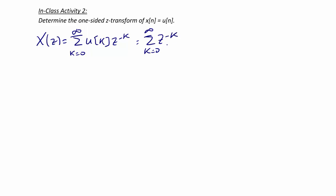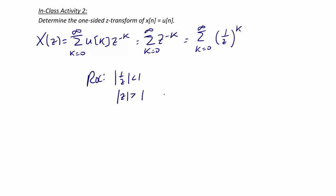This will only converge if 1 over z is less than 1. This is easier to see if we write the summation as the sum from k equals 0 to infinity of (1 over z) raised to the k. If 1 over z is greater than 1, then as k approaches infinity this number goes to infinity. So the region of convergence is |z| greater than 1. The Z-transform solution is 1 over (1 minus 1 over z), or X of z equals z over (z minus 1).